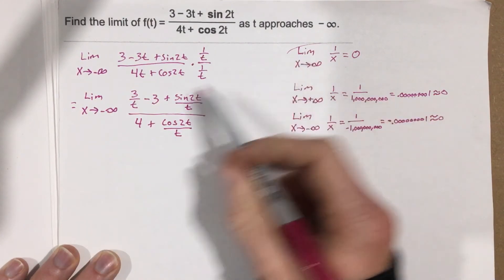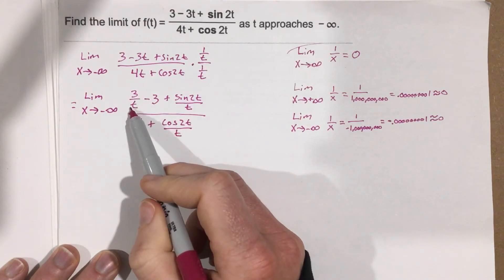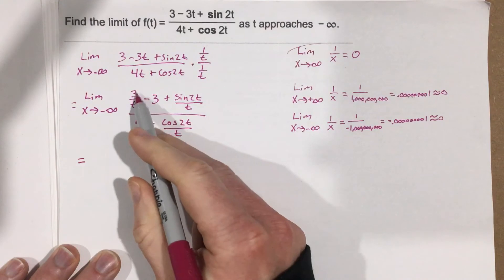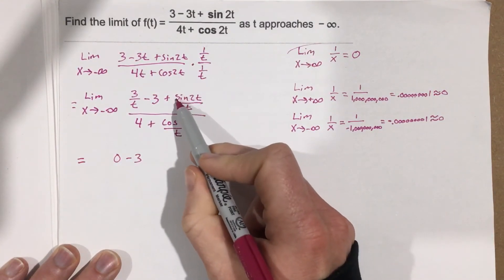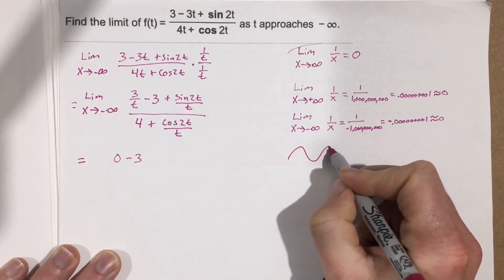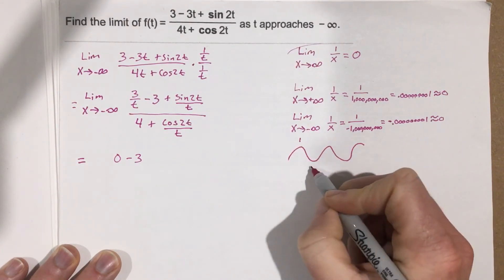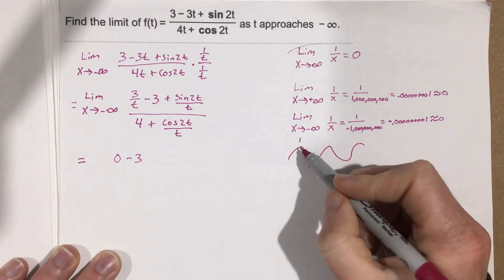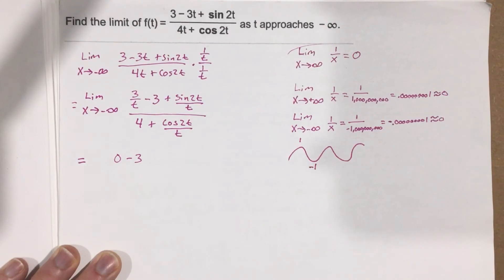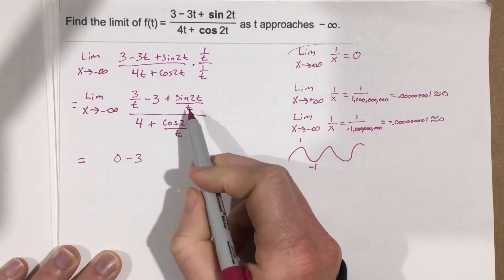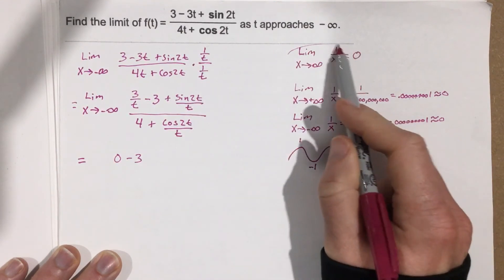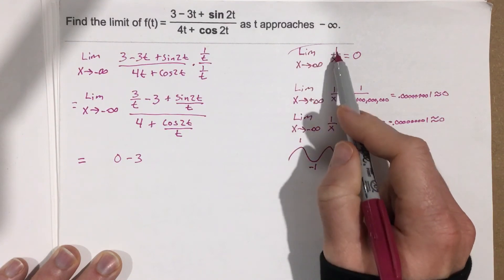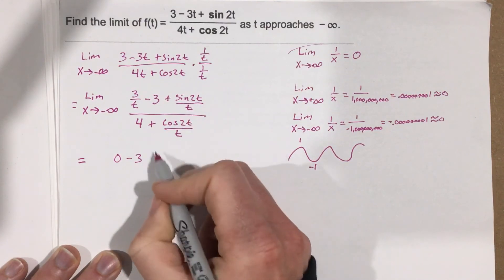Now I know the limit as t approaches negative infinity for 3 over t is just going to be 0. What about sine of 2t over t? Remember, sine is a wave that constantly varies between a peak of 1 and a bottom of negative 1. Because it's always between 1 and negative 1 and we're dividing by t — which is going to infinity — we're getting a small number over a really large number, the same scenario as 1 over x. So this is still going to lead to 0.